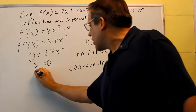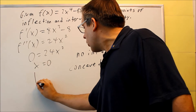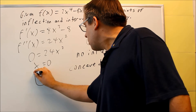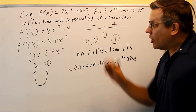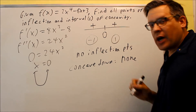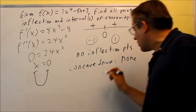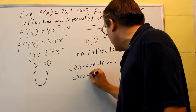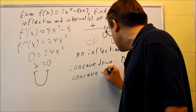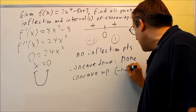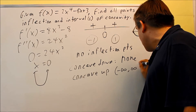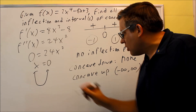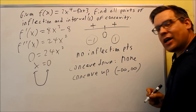In this case, it's always going to be concave up — from negative infinity to positive infinity. Basically, the graph is always concave up, there are no intervals that are concave down, and it's always going to be concave up.